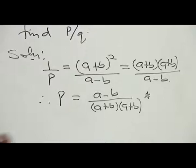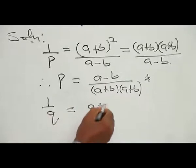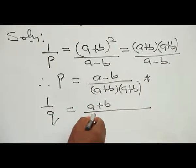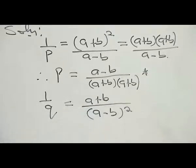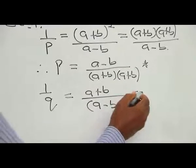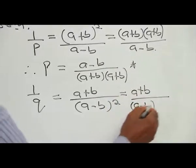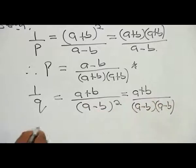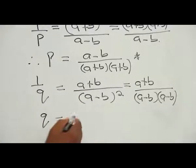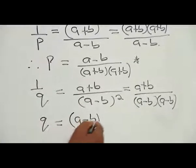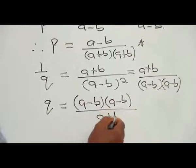For Q, we have 1 over Q equals (A plus B) all over (A minus B) squared. This is (A plus B) divided by (A minus B)(A minus B). Therefore Q equals (A minus B)(A minus B) all over (A plus B).